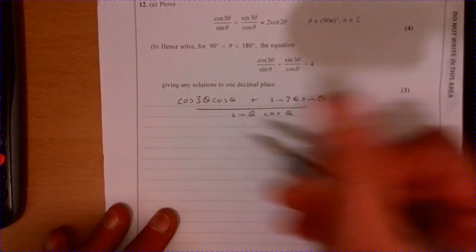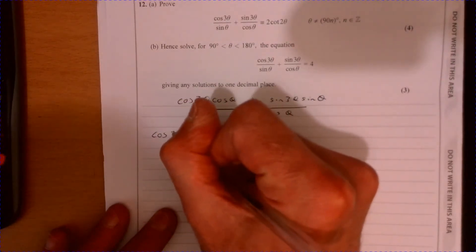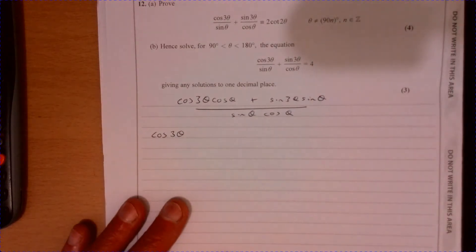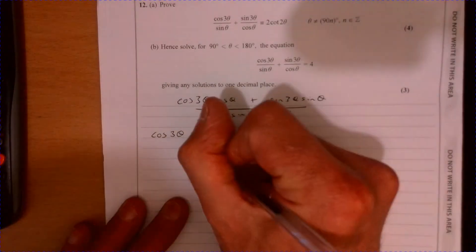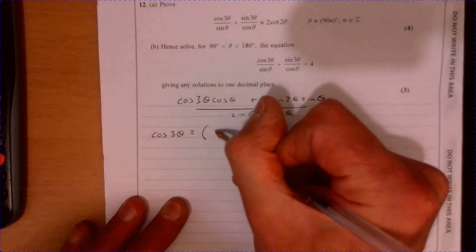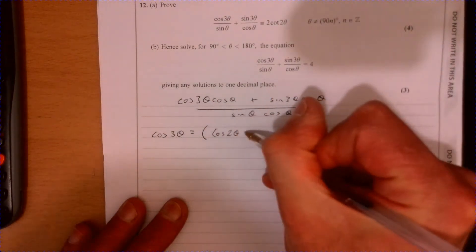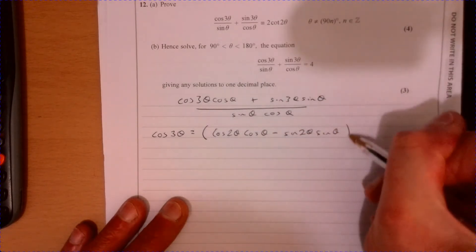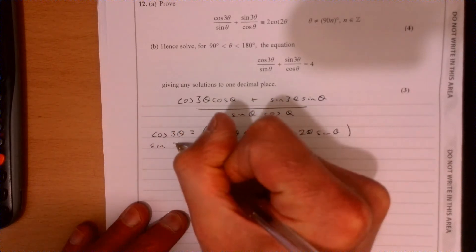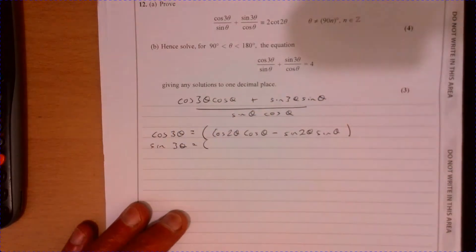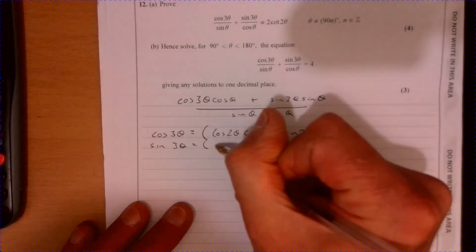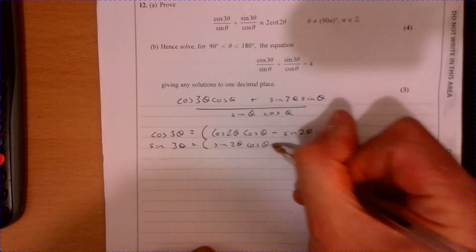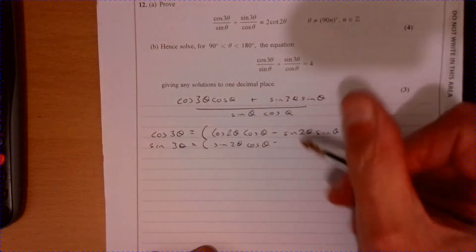I've got these 3θ so I need to do something with that. Using a double angle formula or addition formula, cos 3θ is equal to cos 2θ cos θ take away sine 2θ sine θ. And likewise, sine 3θ is going to be equal to sine 2θ cos θ plus cos 2θ sine θ. These are all in the formula ebook.